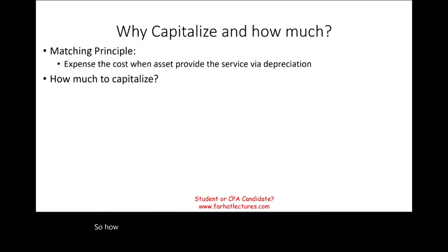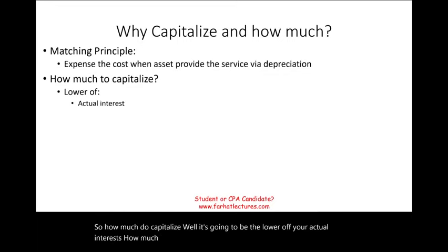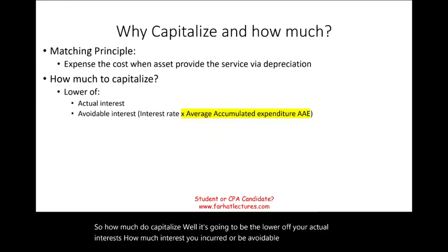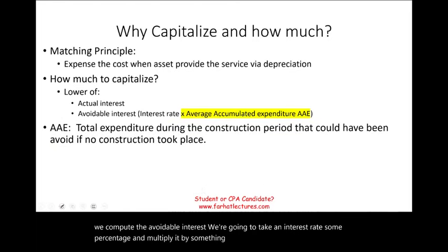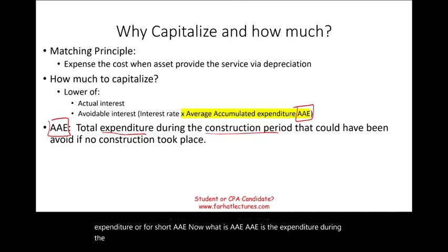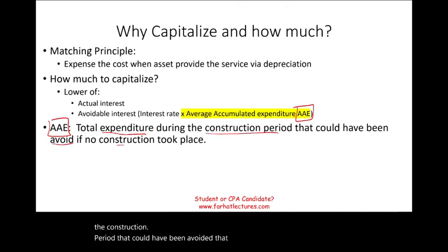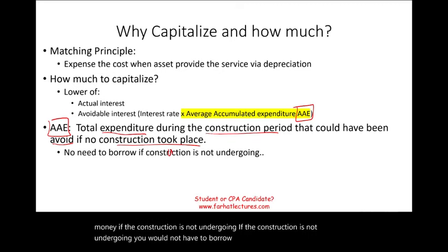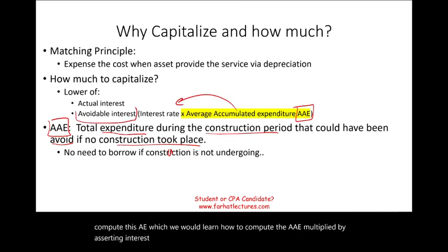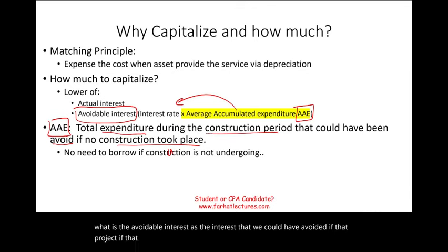So how much do we capitalize? It's going to be the lower of your actual interest — how much interest you actually incurred — or the avoidable interest. How do we compute the avoidable interest? We're going to take an interest rate and multiply it by something called the Average Accumulated Expenditure, or AAE. The AAE is the expenditure during the construction period that could have been avoided if no construction took place. The assumption is you would not have had to borrow money if the construction were not underway.